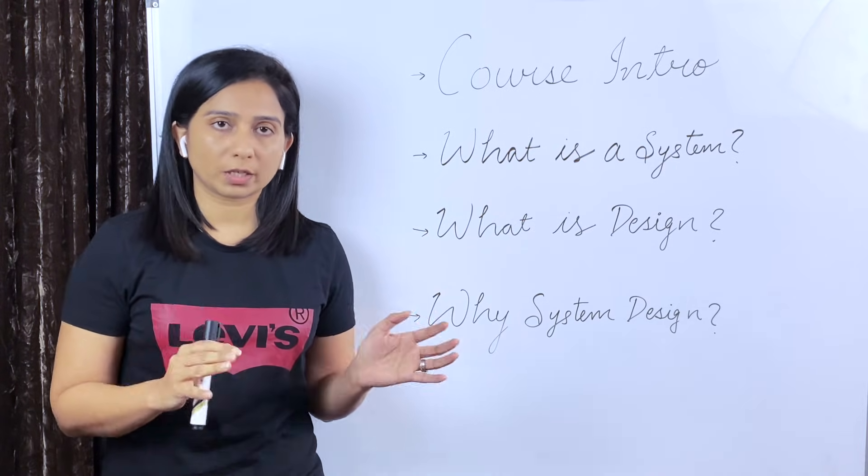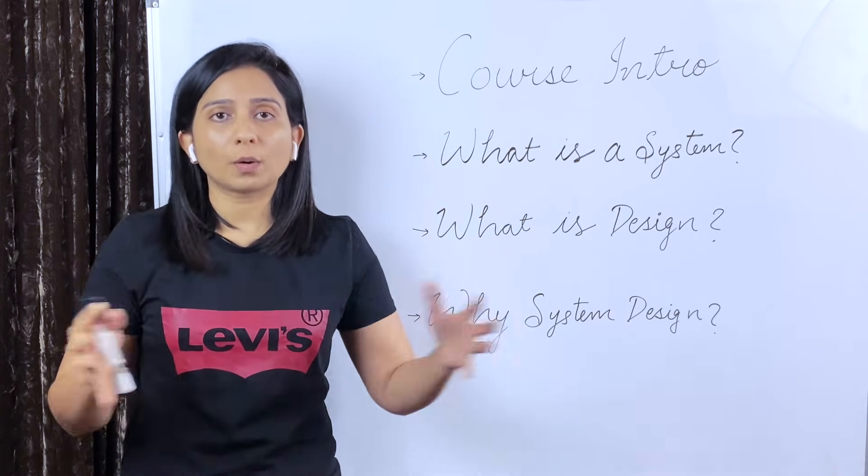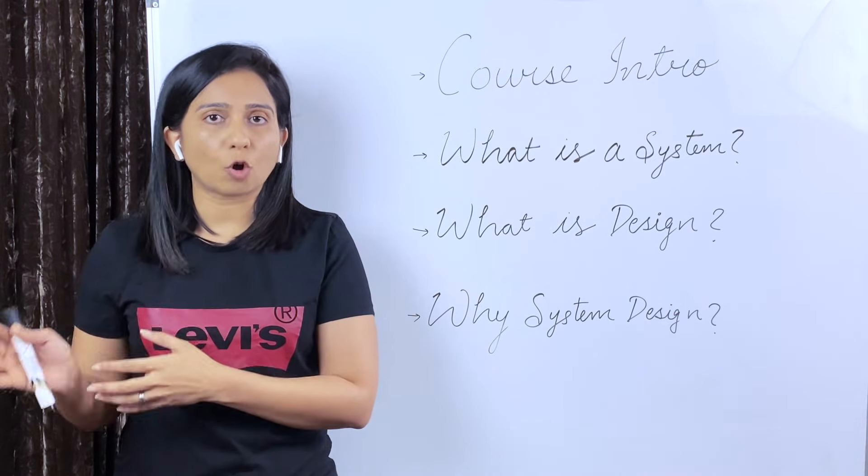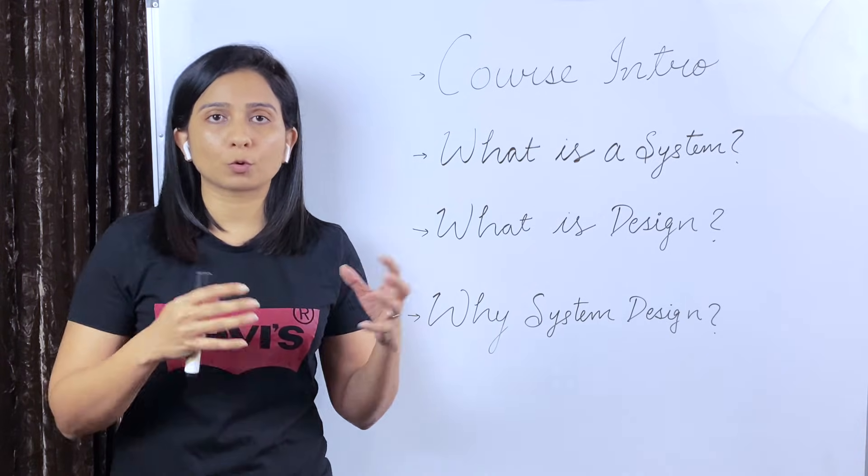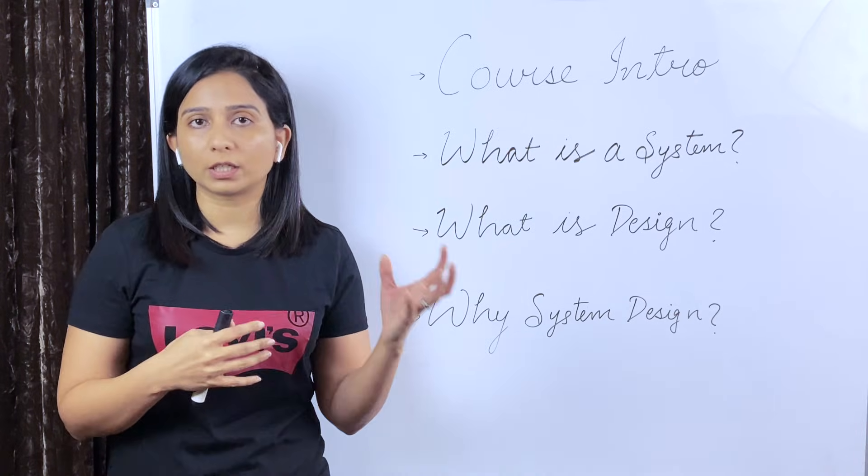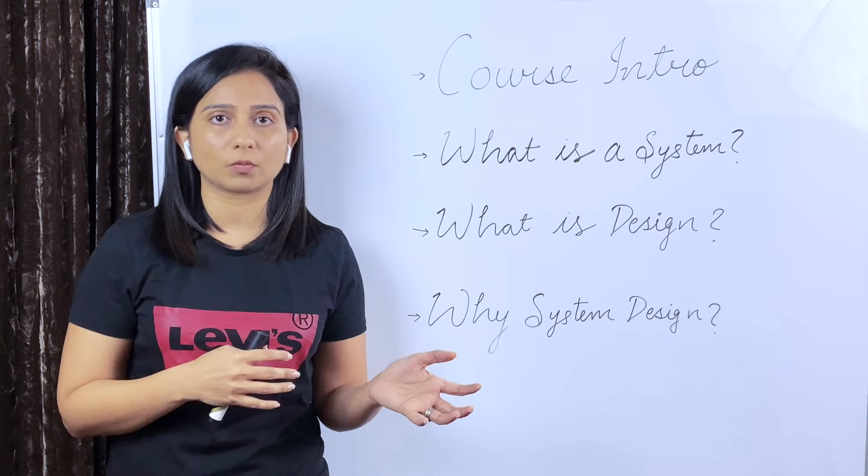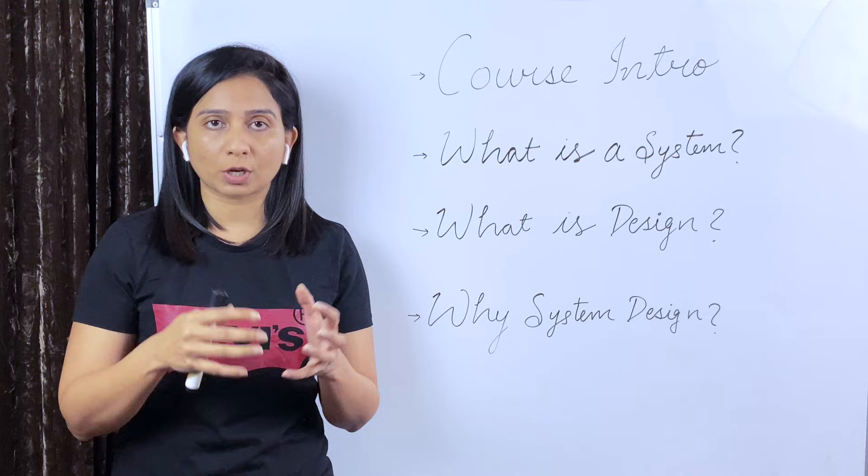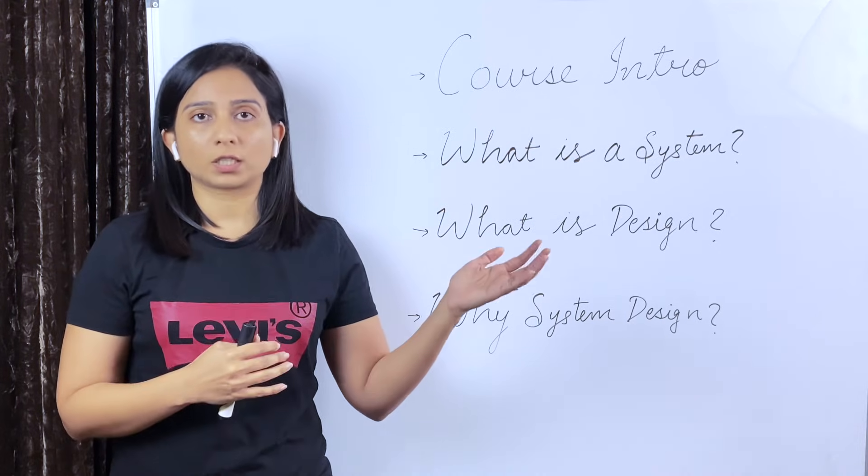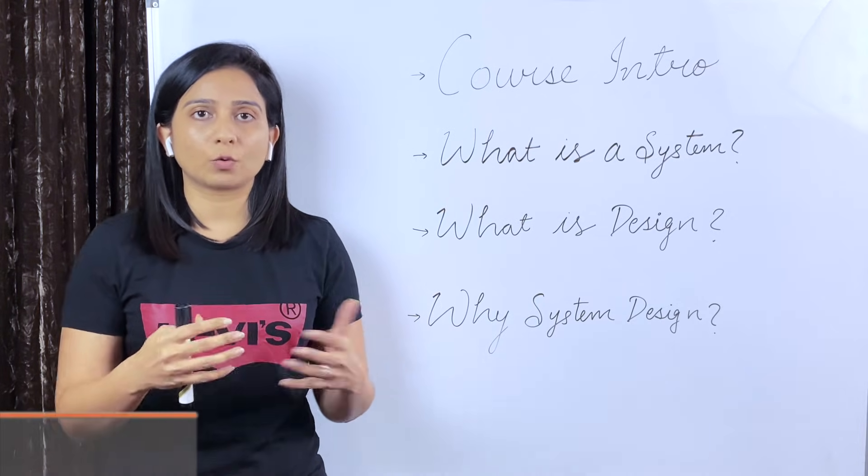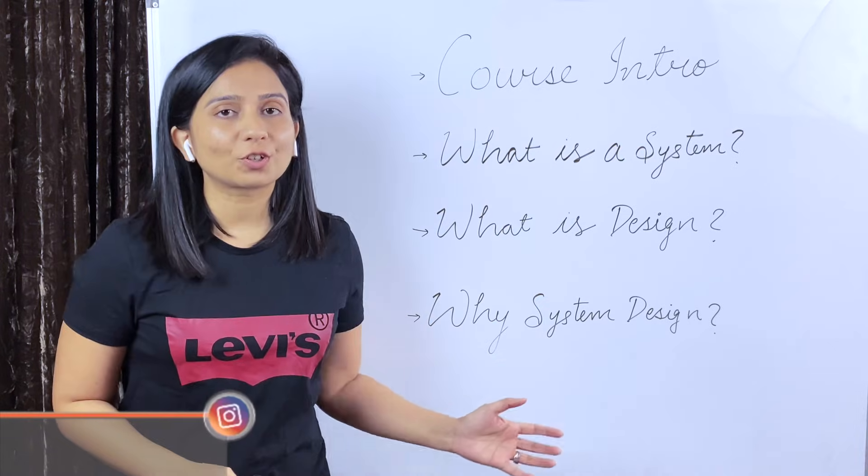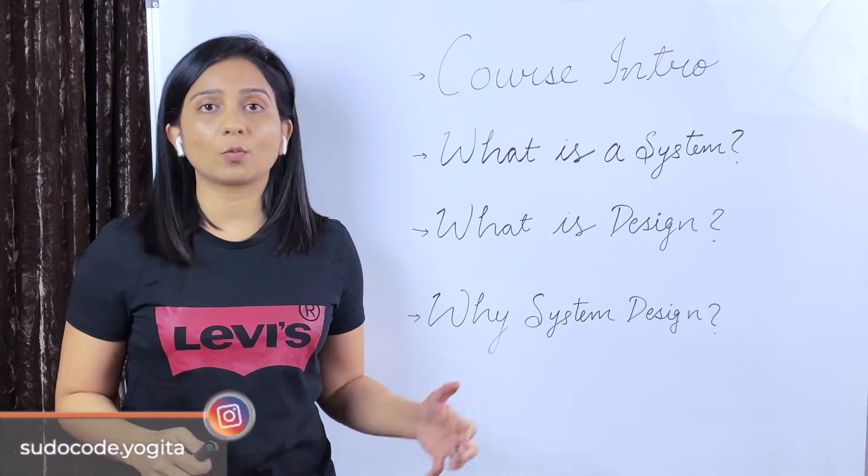So what we're going to do here in this course is we're going to pull apart the components of a system, understand each component in separation with pros and cons and why it is used, where it is used, what are the advantages and disadvantages, and then combine them together at the end to build a large scale system. This is how this course is going to proceed. So that was a short introduction to system design and why system design is needed.